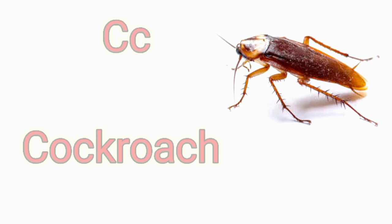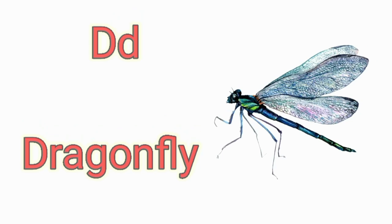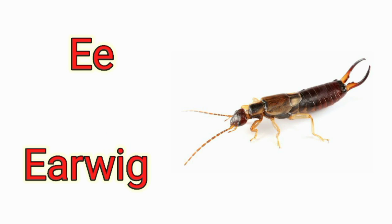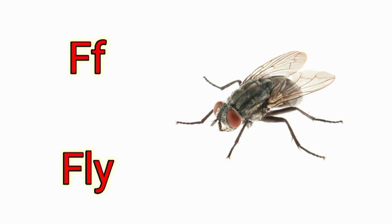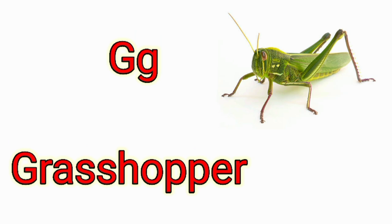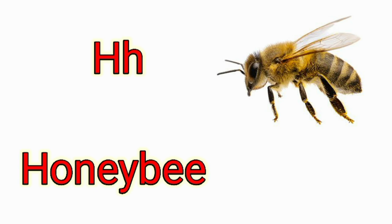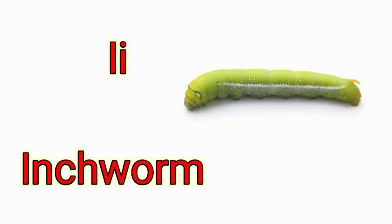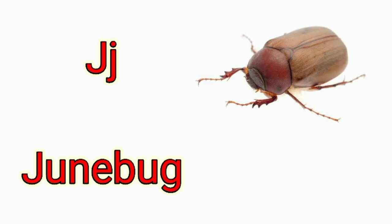A is for Ant. B is for Butterfly. C is for Cockroach. D is for Dragonfly. E is for Earwig. F is for Fly. G is for Grasshopper. H is for Honeybee. I is for Inchworm. J is for Junebug.